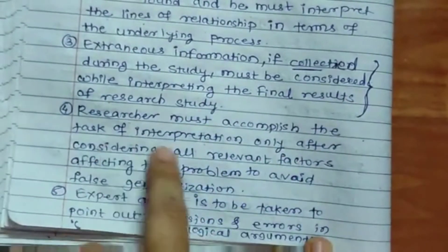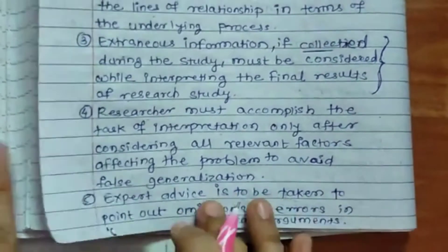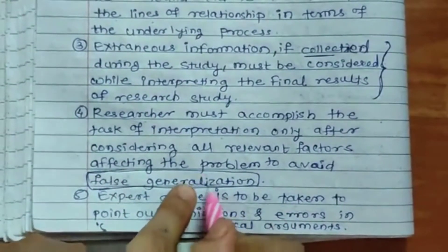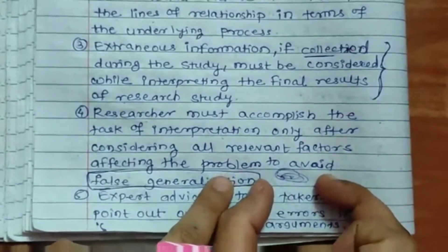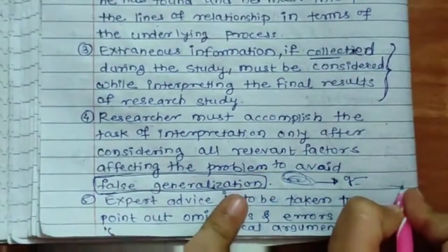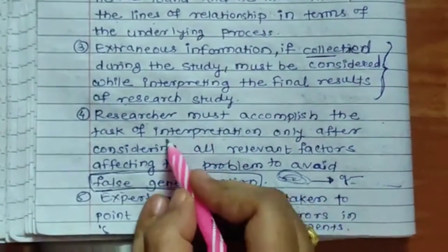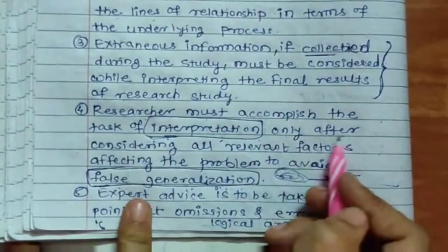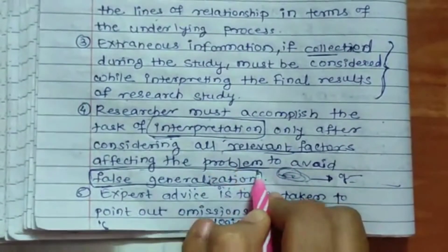Researcher must accomplish the task of interpretation only after considering all relevant factors affecting the problem to avoid false generalization. False generalization का problem यह होता है कि आपने whole data set में से sample data लिया है, और वो sample data को analyze करके result derive कर रहे हो. But it may be possible कि अगर आपका data बहुत small है, उसकी quantity बहुत less है, तो उससे derive होने वाला generalized result सभी samples को applicable नहीं होगा — उसको हम बोलेंगे false generalization. False generalization avoid होना चाहिए, उसके लिए proper interpretation करना है और moderate data size collect करना है. Researcher must consider all relevant factors to avoid false generalization.